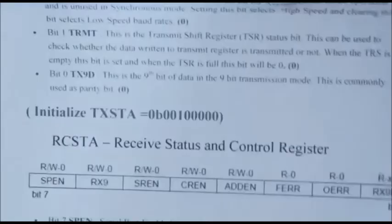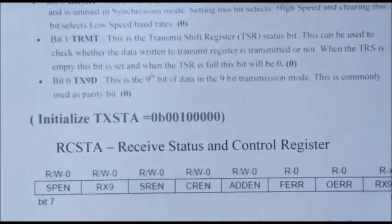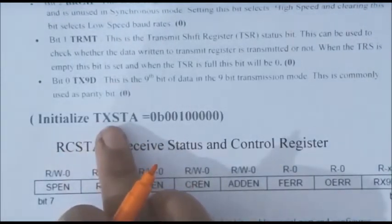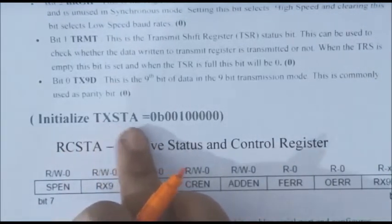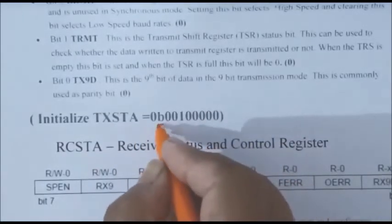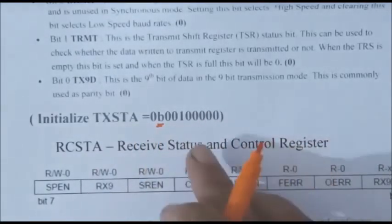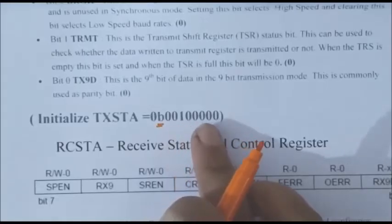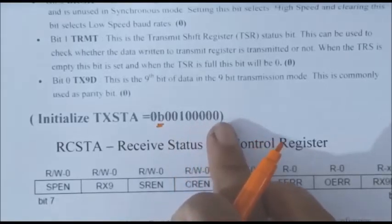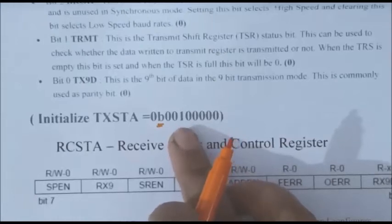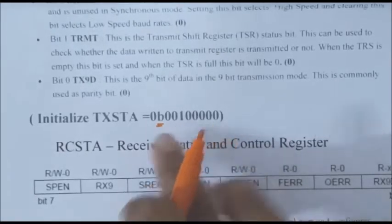To initialize the TXSTA register with a binary number, we write: TXSTA = 0b00100000. The prefix 0b indicates the number is in binary. Only the TXEN bit is set to 1, which enables transmission.